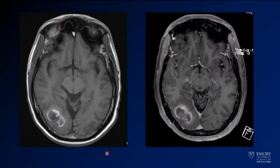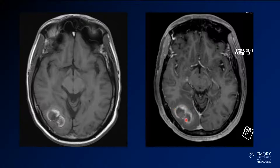Looking at more images here, what you have is an area of T1 shortening — it's pretty T1 hyperintense. You've got a little bit of surrounding enhancement around it, but it's definitely not a predominant component of enhancement.